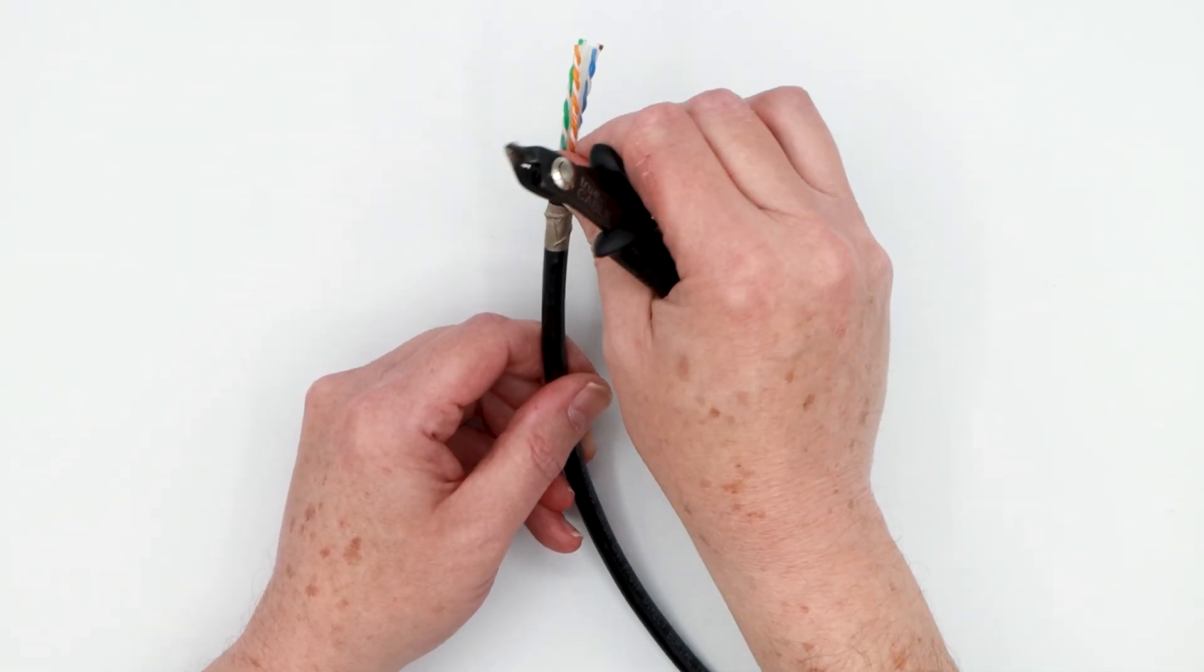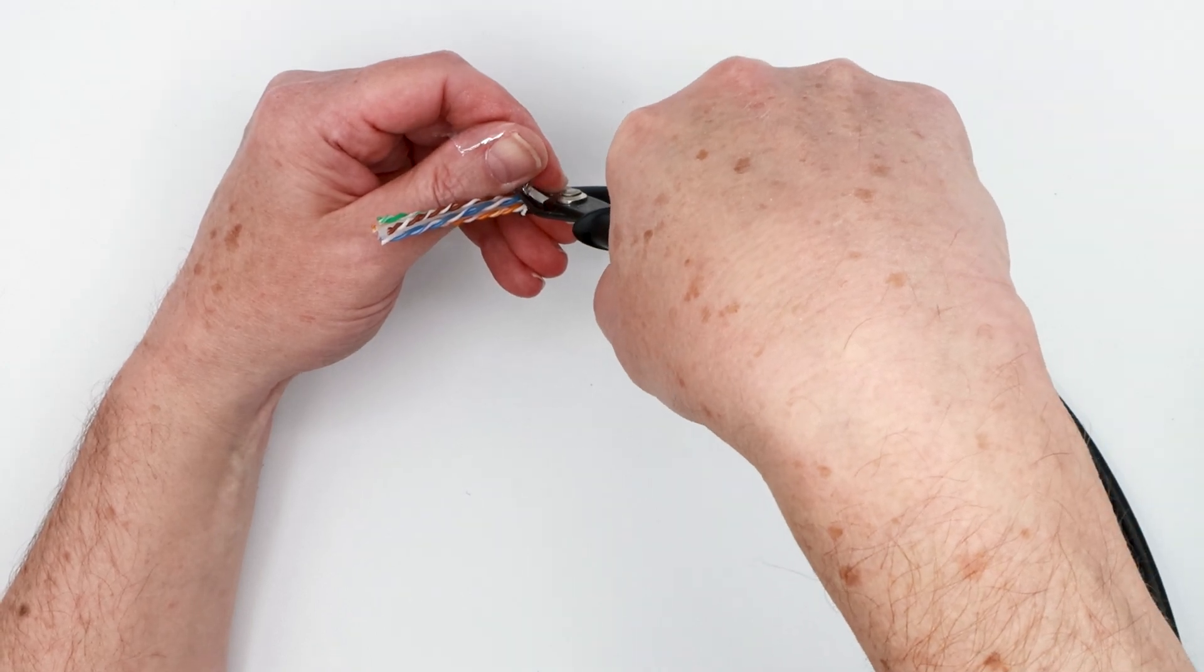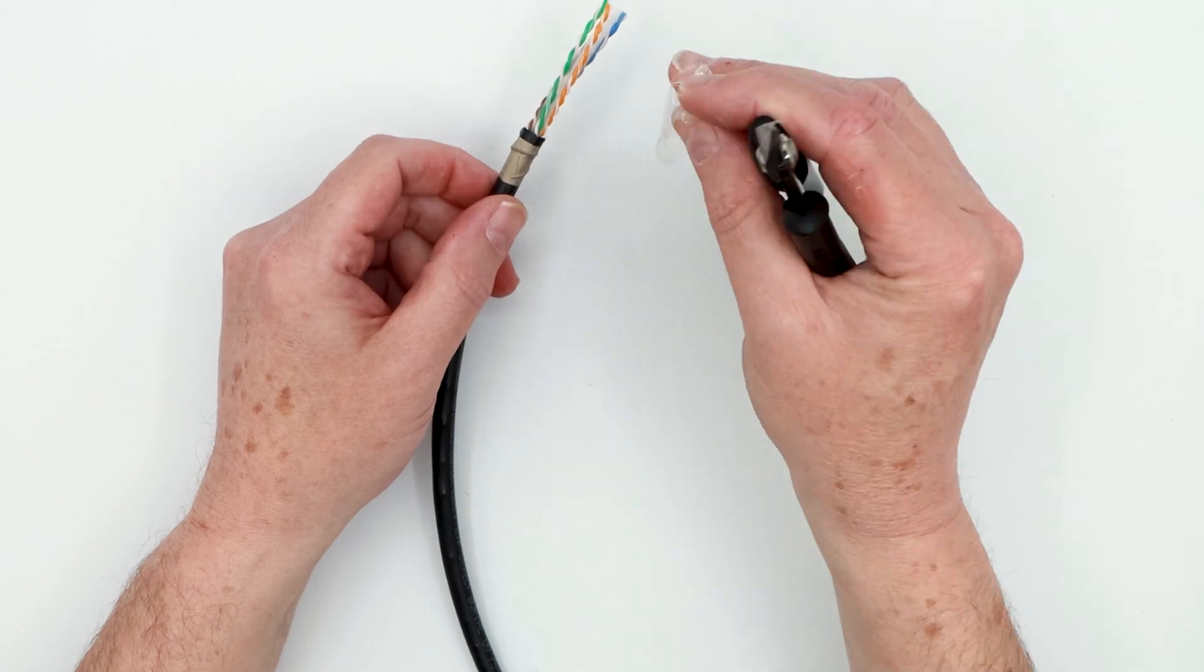So the next step is to remove this dielectric polyester tape. So we'll just make a simple nip and then you can rip that off at your leisure. You don't have to be super careful with it. It's really thin.